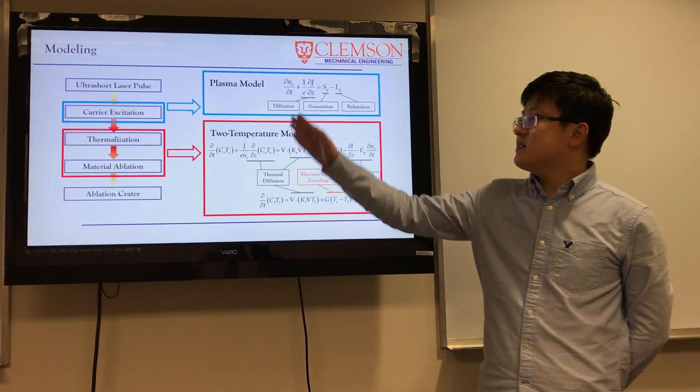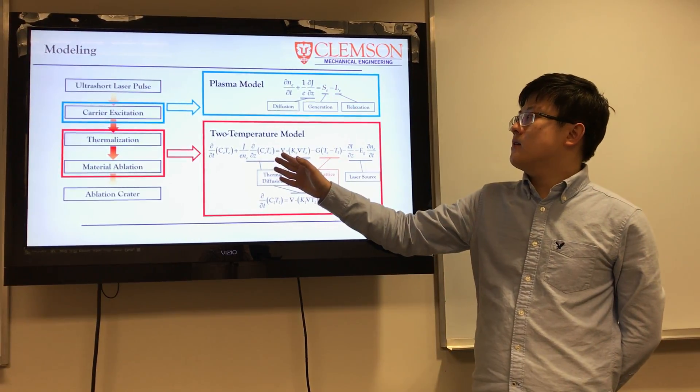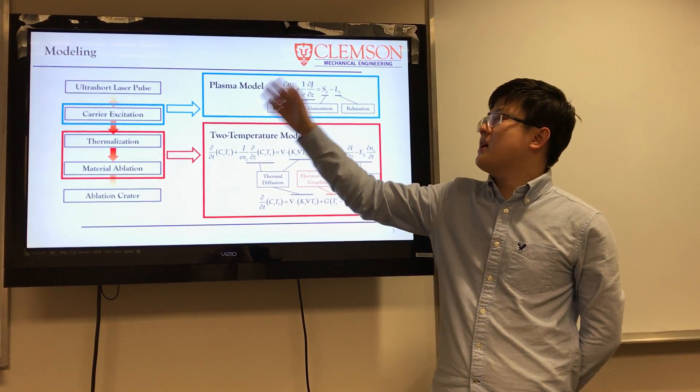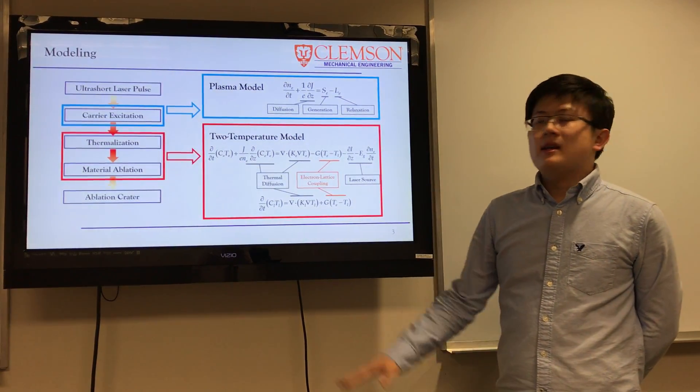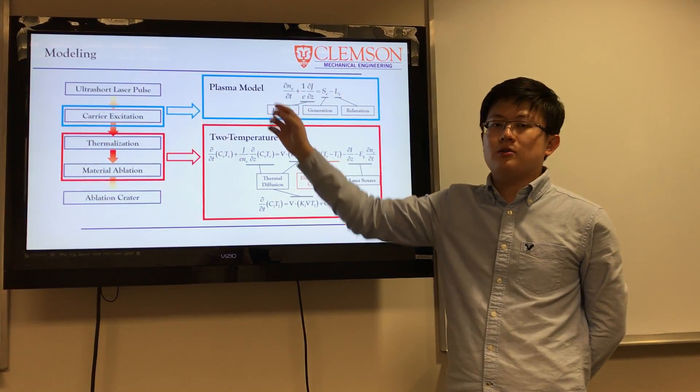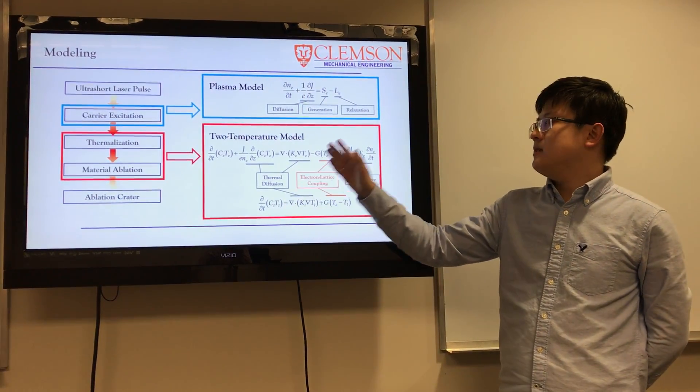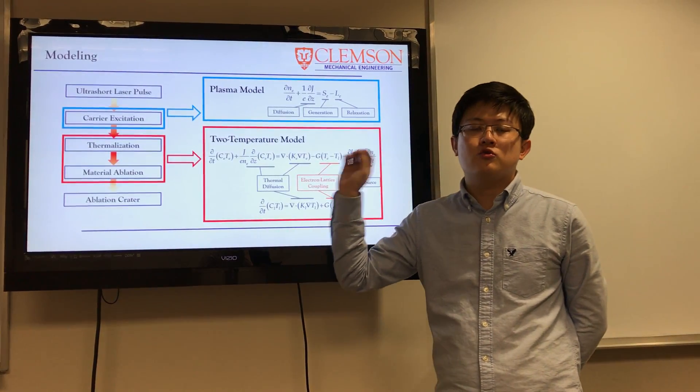In the plasma-temperature combined model, electron and temperature behavior can be described based on the plasma model and two-temperature models respectively. Electronic diffusion, generation and relaxation are described in the plasma model, and thermal diffusion, electron-lattice coupling and laser source are the major considerations in the two-temperature model.